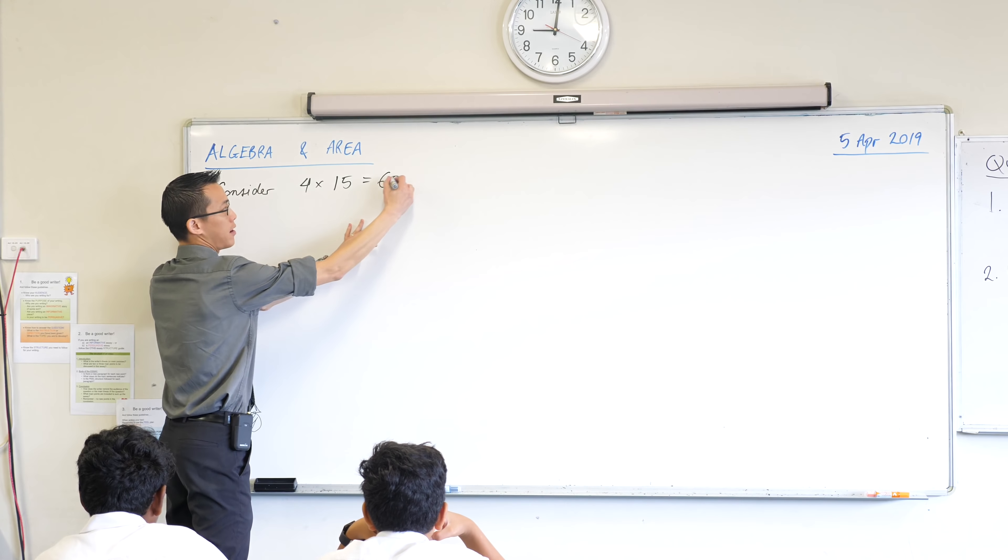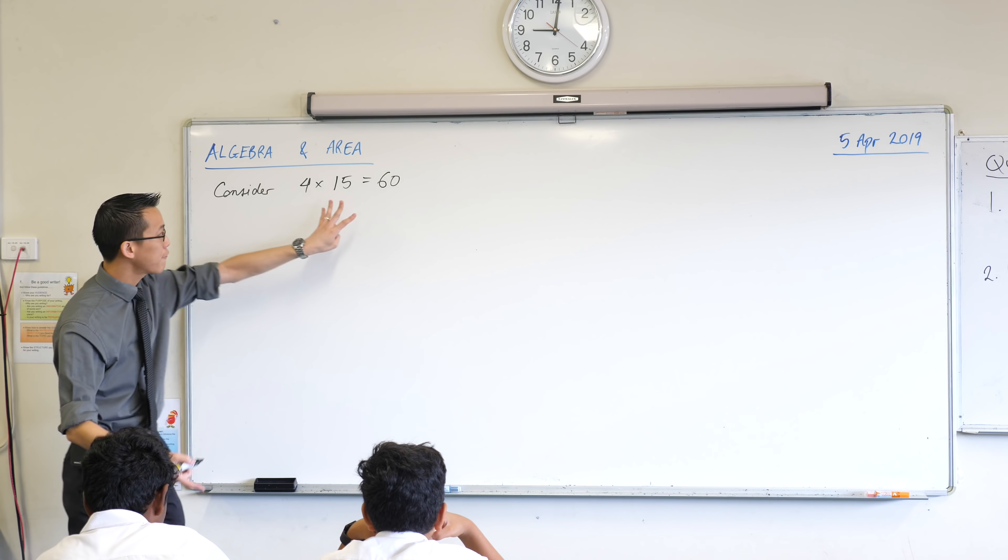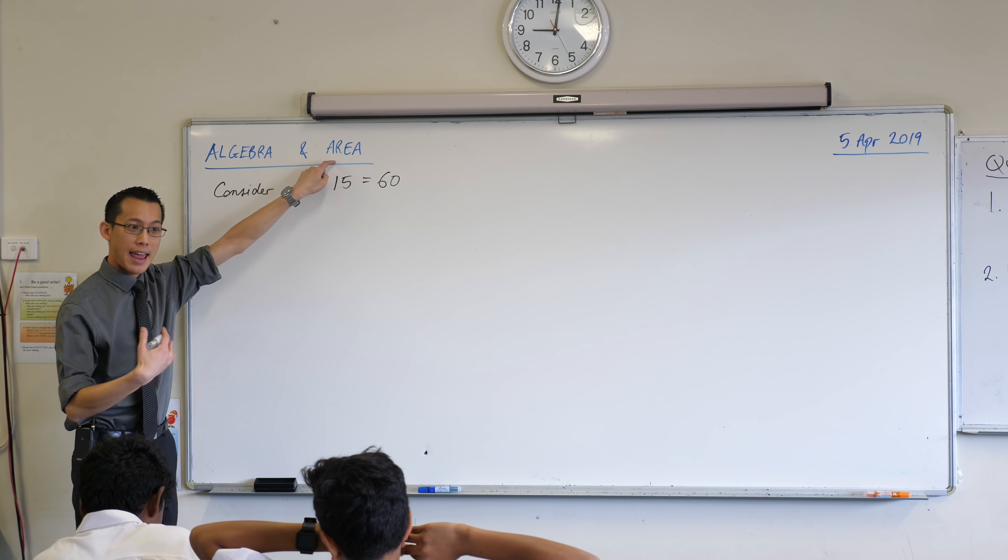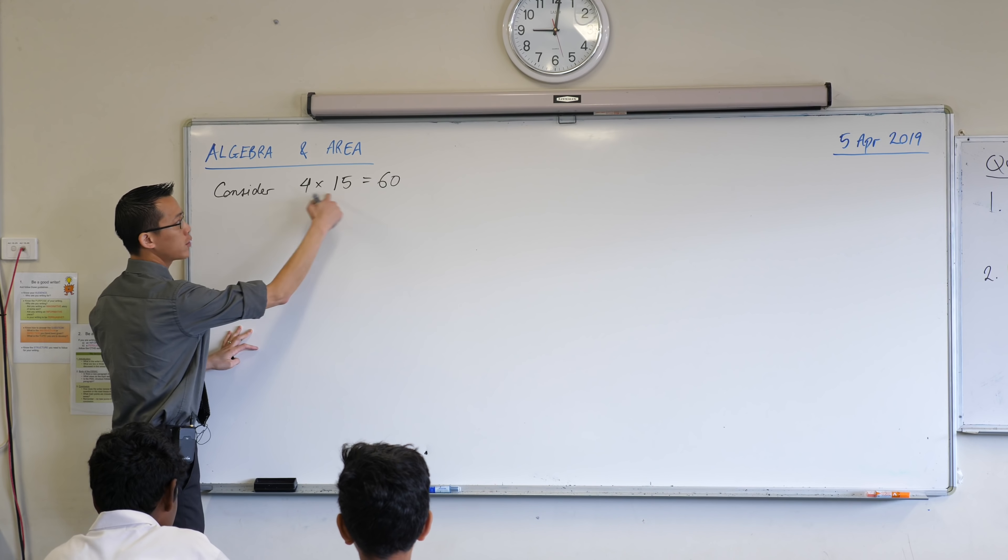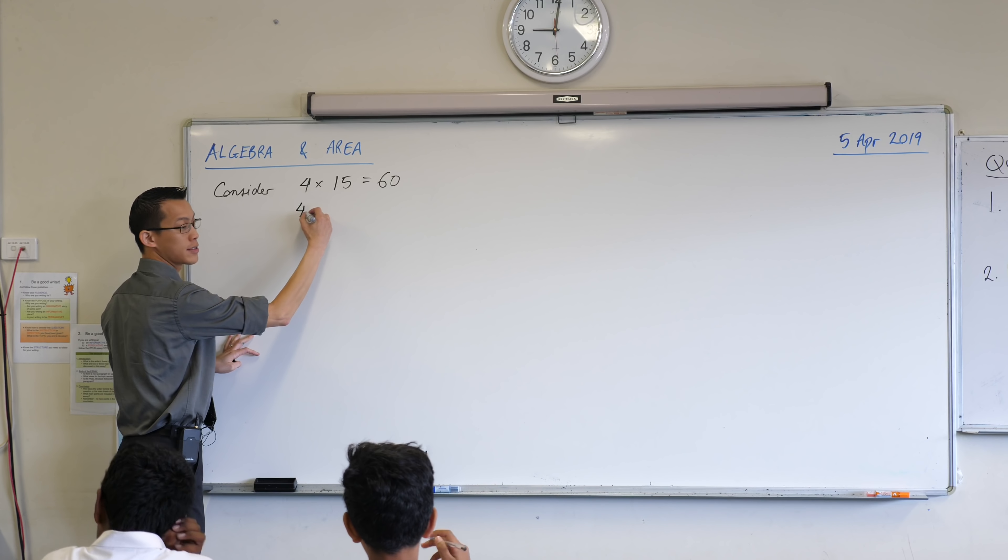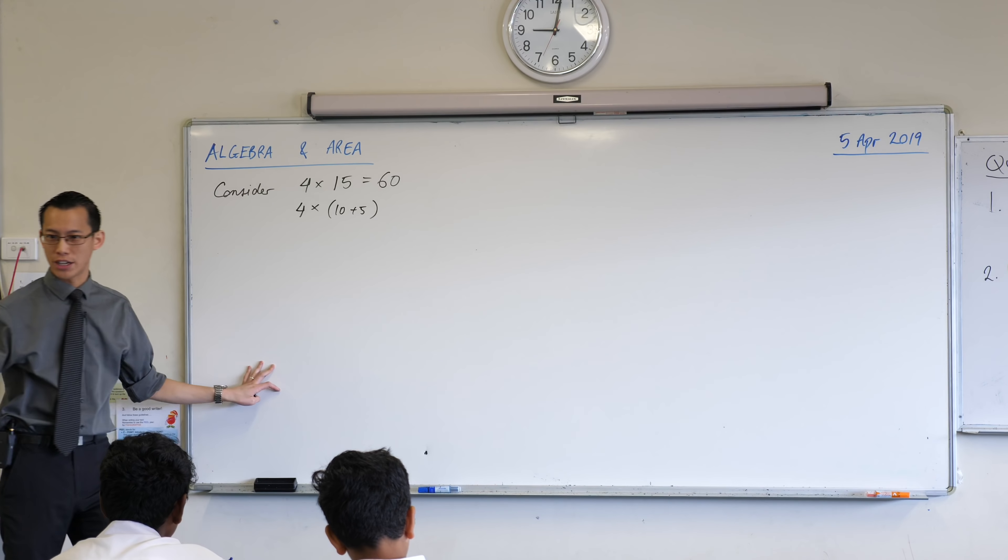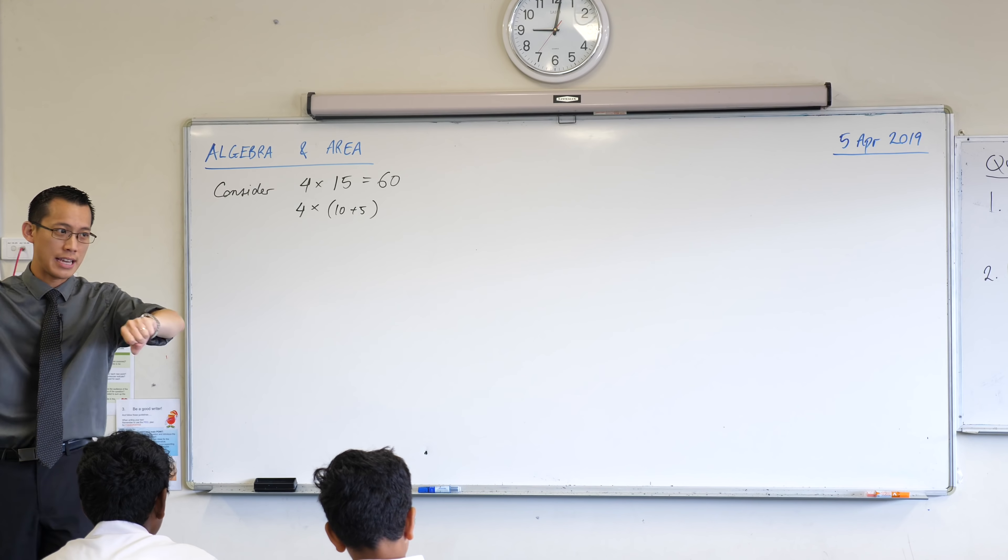You can think of it as a number, but you can also think of every multiplication between two things. You can also think of it as an area. Here's the way I'm going to write it. 4 times 15 is the same as 4 times 15. I'm going to break it into a 10 and a 5. I'm going to take the 10s and I'm going to take the units out.